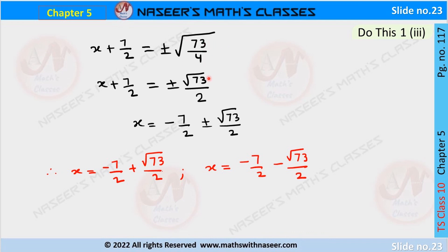Since √4 = 2, this becomes x + 7/2 = ±√73/2. Transposing 7/2 from LHS to RHS: x = -7/2 ± √73/2.